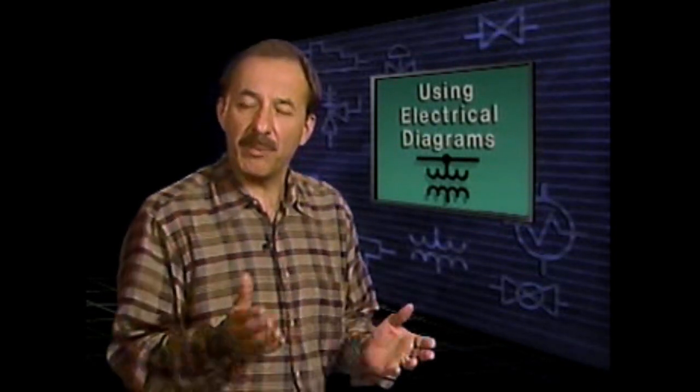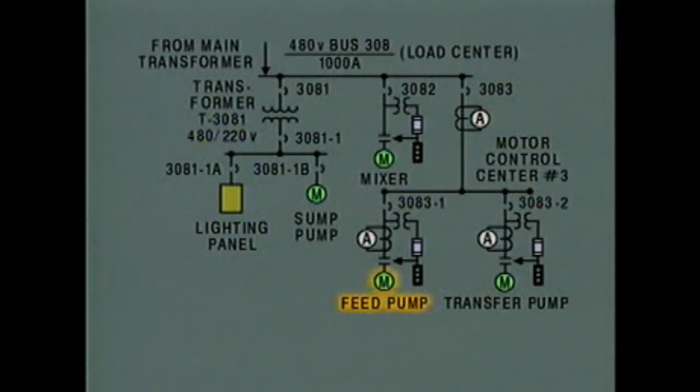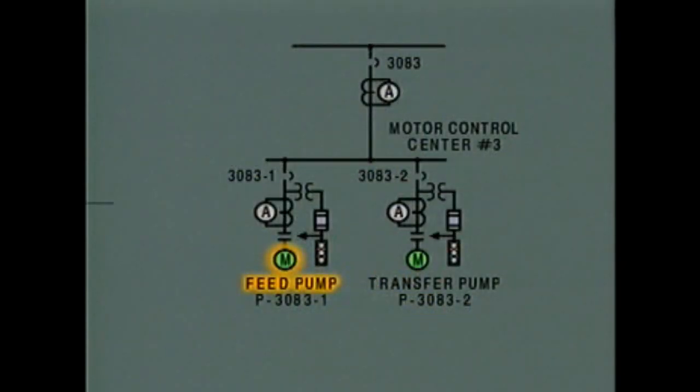Before many kinds of maintenance can be done on plant equipment, the equipment must be isolated. For electrical equipment, this means separating the equipment from the supply of electrical power. To get an idea of how electrical diagrams can help when you need to isolate equipment, let's look at an example. In this example, the feed pump motor has to be shut down for repairs while the rest of the system remains in service. On the diagram, we can see that the feed pump motor is fed by motor control center number three.